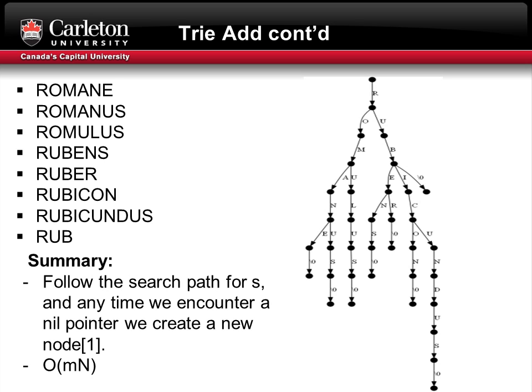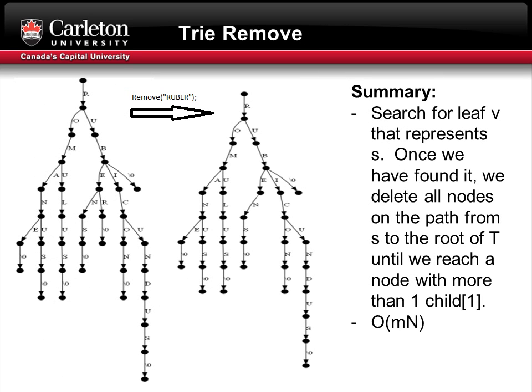This data structure has a running time of O(M·N), where M is the size of the word being added and N is the size of the alphabet. The next operation is the remove operation of the trie data structure. We search for leaf V that represents S. Once found, we delete all nodes in the search path from S to the root of T until we reach a node with more than one child. In this example, we try removing the word ruber. We search r-u-b-e-r. There's a null terminator from the r indicating that rub is a word. We remove the null edge and the r edge, ending at a node with more than one child, so we stop there, giving us the resulting tree.